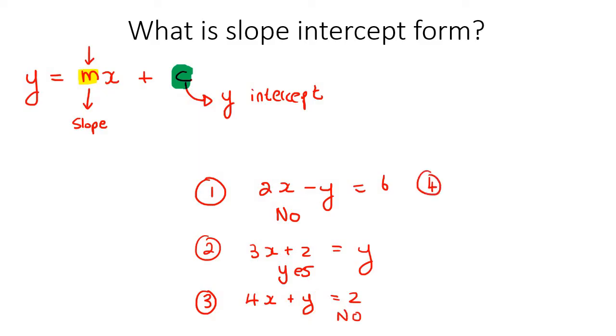Let's try another one. Number 4. So for number 4, it looks like the y is almost by itself, but then you can see that there's this random minus 2. So the y is not by itself. So we would say no.